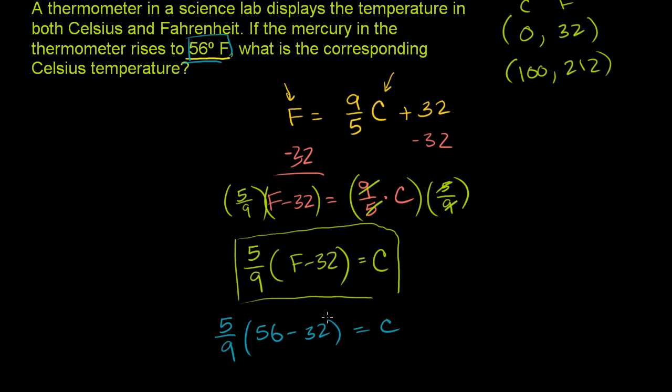So 56 minus 32. Let me continue it up here. 56 minus 30 is 26 minus 2 is 24. So this is going to be 24. So it's going to be 5/9 times 24. This right here, that right there is 24. 5/9 times 24 is going to equal C.